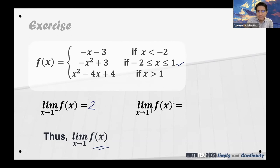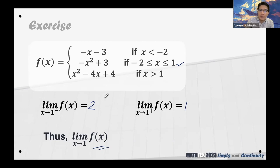The limit from the right of 1 uses the condition x greater than 1, giving 1 minus 4 plus 4, which equals 1. Be careful in the computation. Since the limit from the left equals 2 and the limit from the right equals 1 — they are not equal — thus the limit of the function as x approaches 1 does not exist.